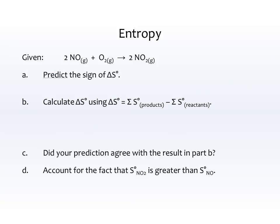Here's our last example. First, predict the sign of delta S — since no subscript is specified, that's delta S of the system. We have three gases total on the left and two gases total on the right; three decreasing to two means delta S should be negative.